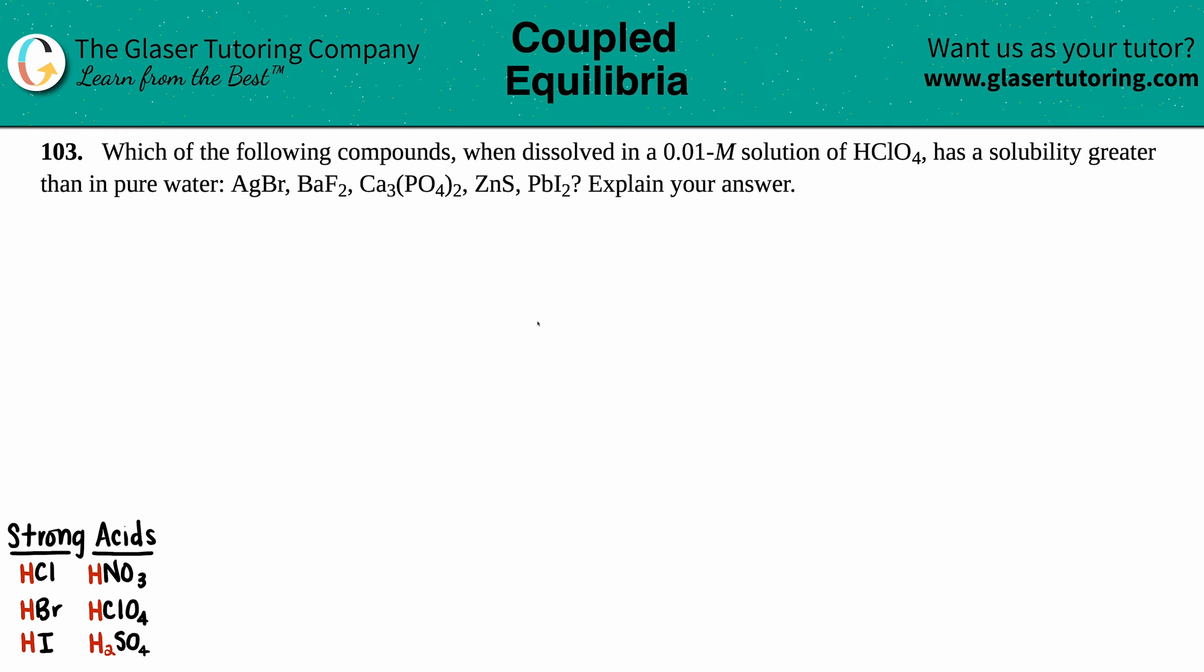Number 103: Which of the following compounds, when dissolved in a 0.01 molarity solution of HClO4, has a solubility greater than in pure water? And then they give us five choices: AgBr, BaF2, Ca3(PO4)2, ZnS, and PbI2. Which one of these, or many of these, will have a greater solubility?